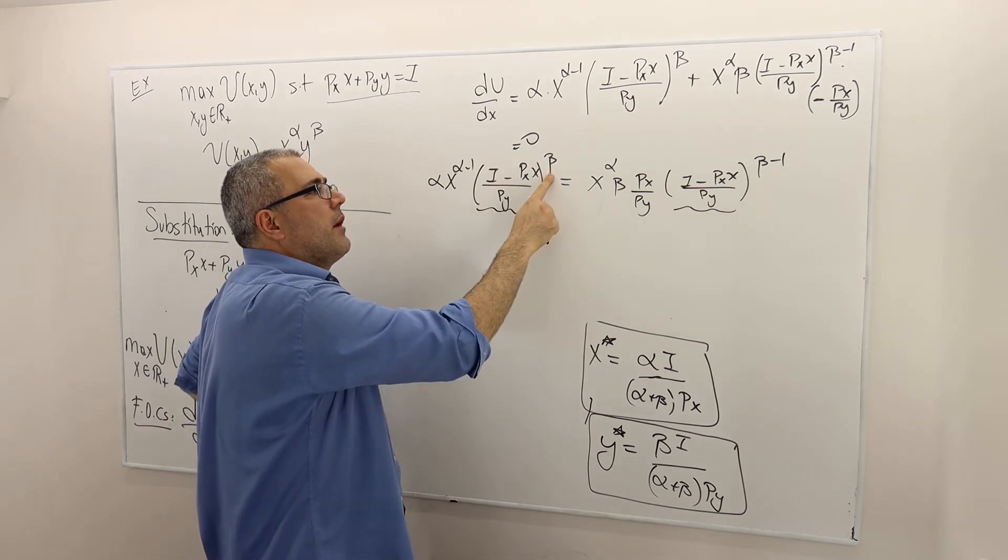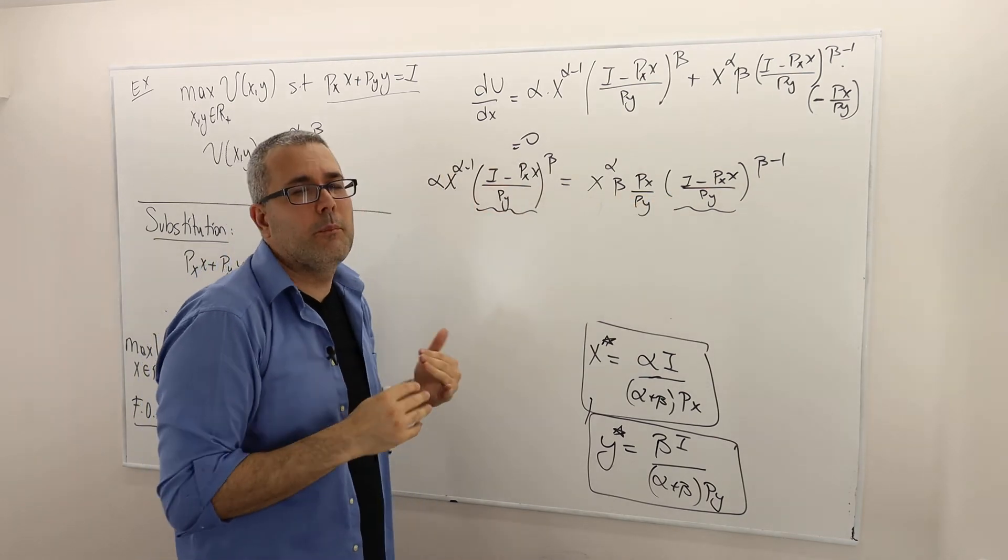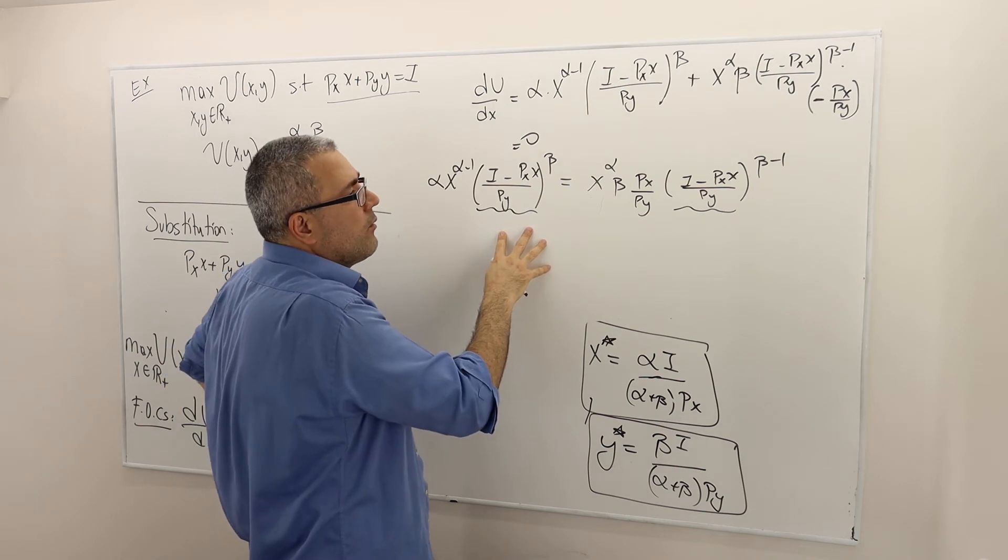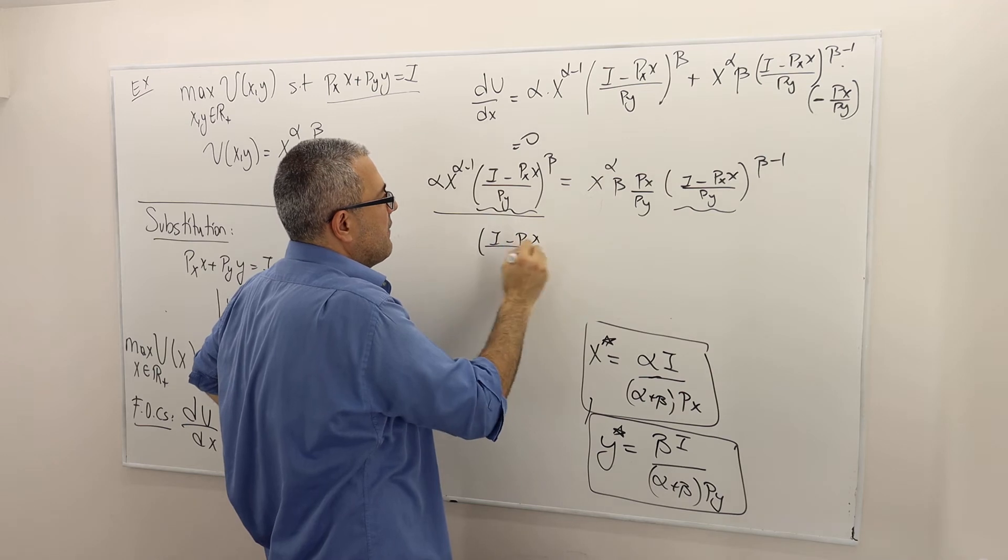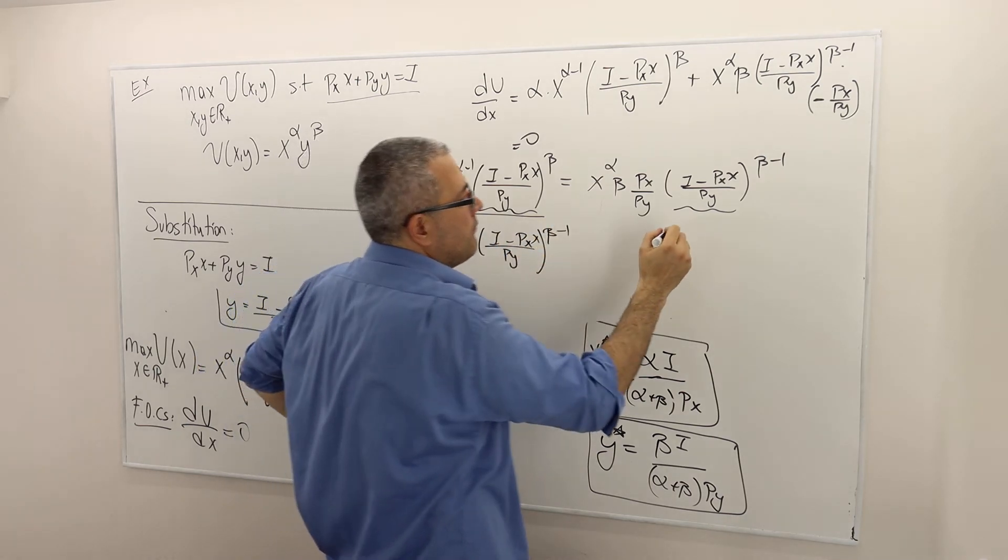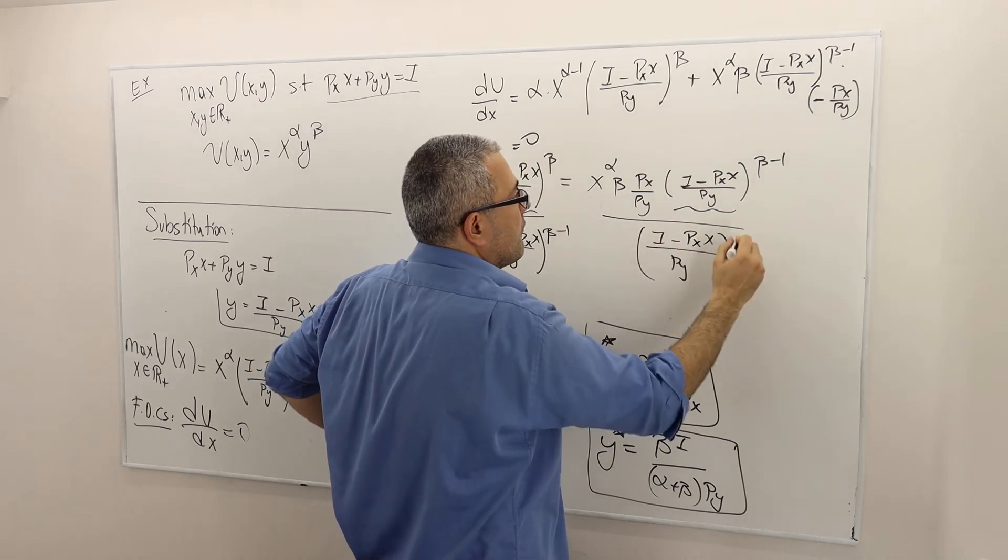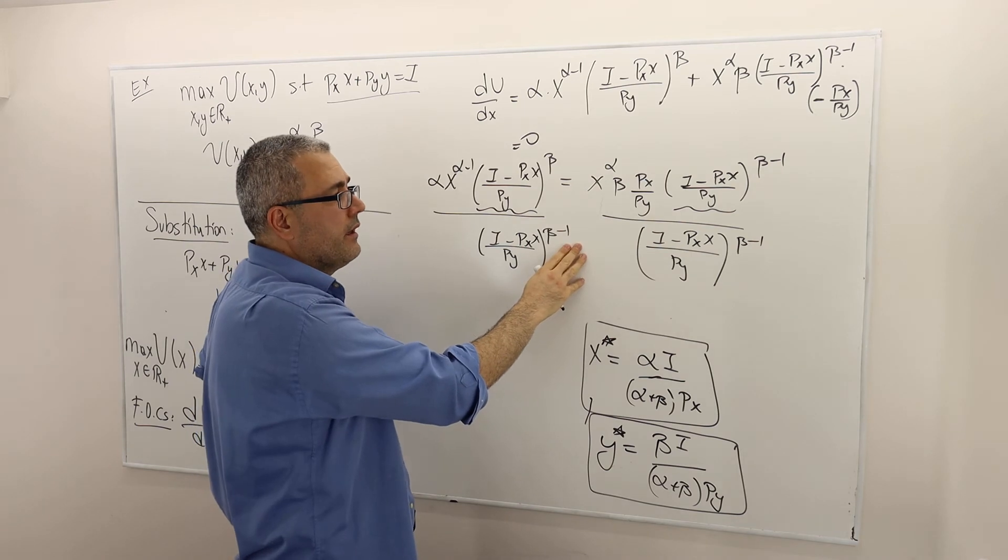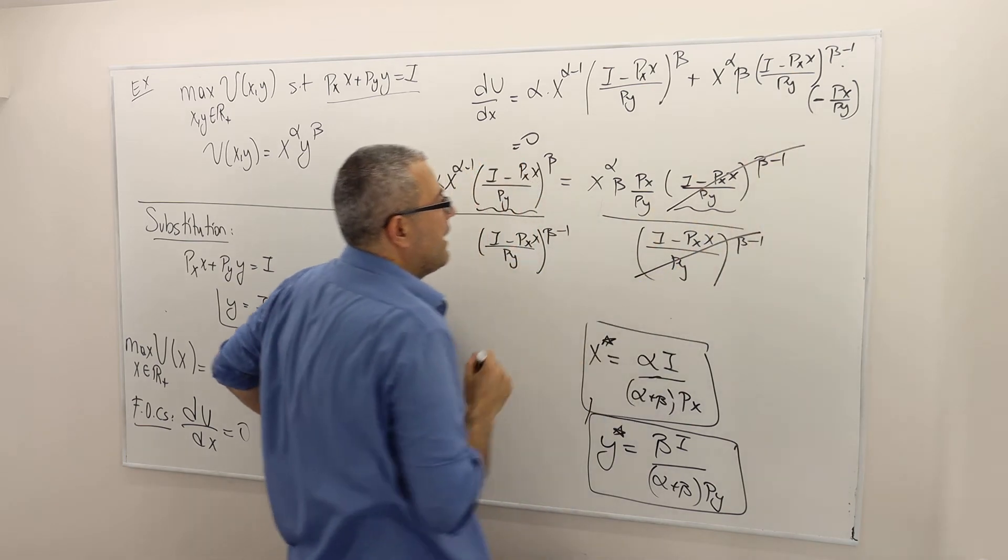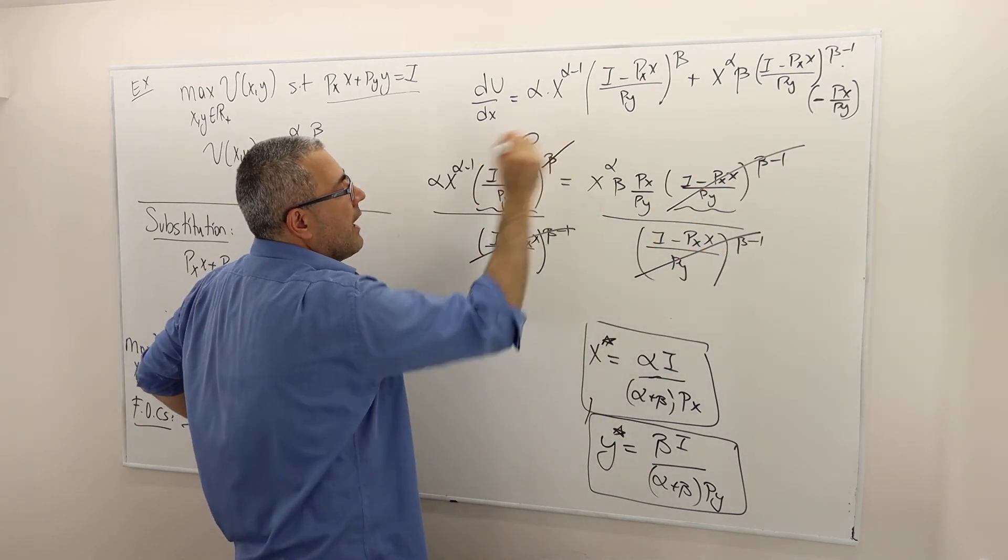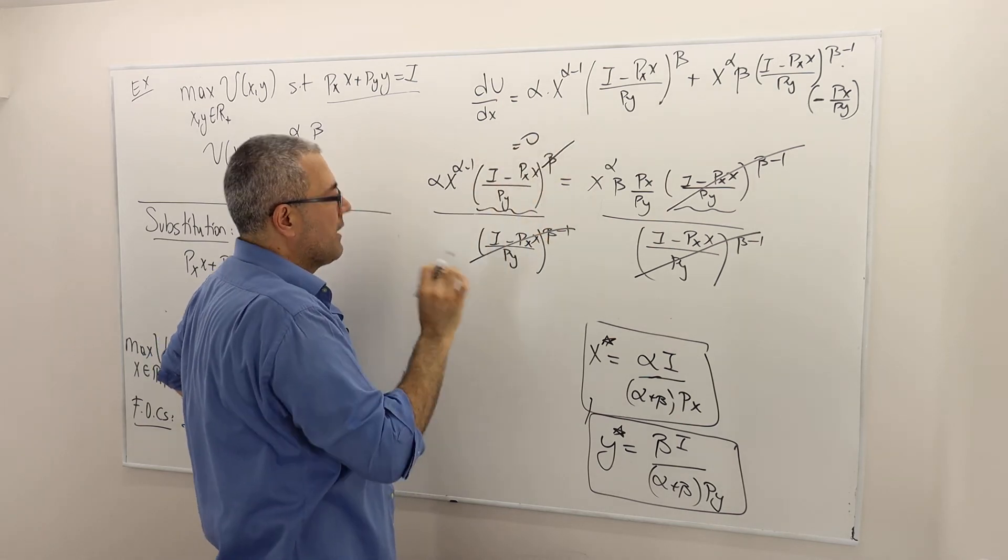Here it's multiplied by beta. Here it's multiplied, I'm sorry, not multiplied. Here it's the power of beta. Here it's the power of beta minus 1. So here, what I can do, I can divide both sides by I minus PXX divided by PY beta minus 1. And this doesn't change the equality, right? Assuming that this term is non-zero, obviously. So these are going to cancel out. This is going to go away and I'm going to have just to the power of 1. Very good.